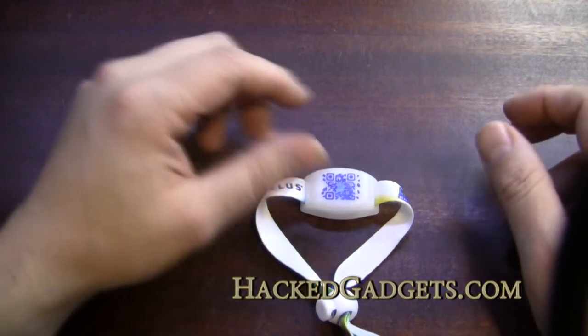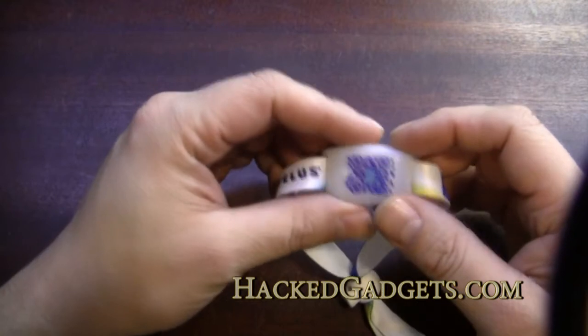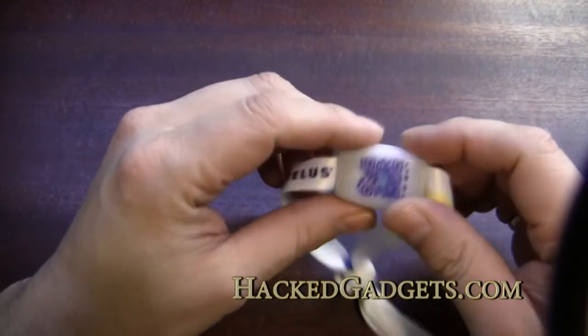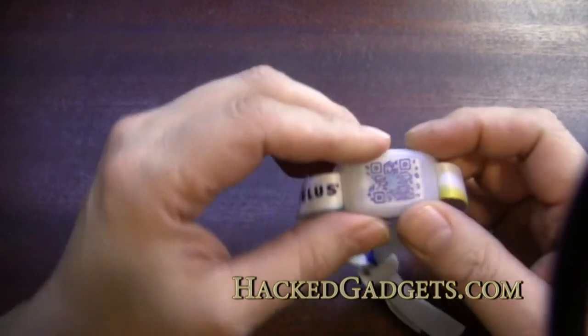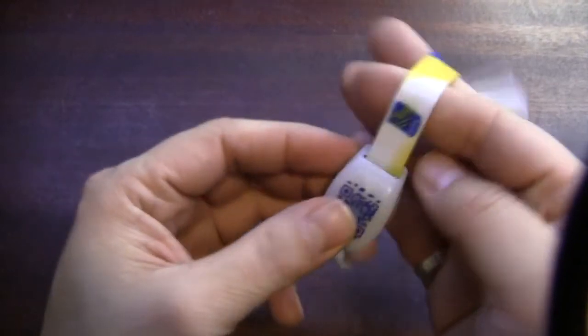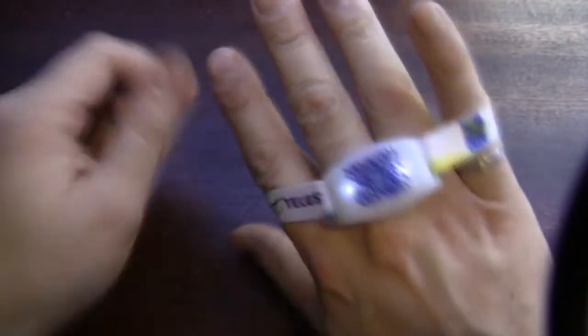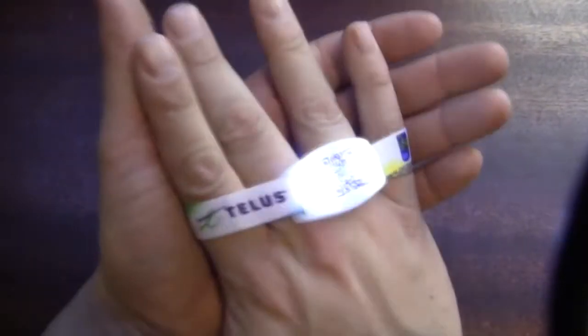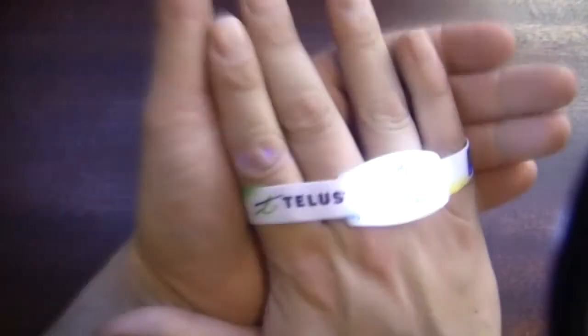Hey guys, Alan from Hack Gadgets here. My daughter was at a school event and she brought home this little thing that they were wearing on their wrist. It's kind of cool actually. They would wear it on the wrist and as they were clapping or doing whatever they did in the school event, all these kids had these things flashing away at the same time.